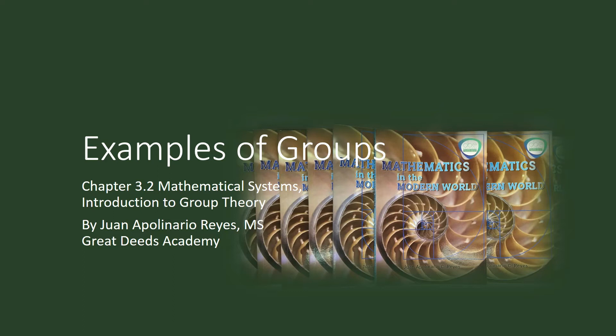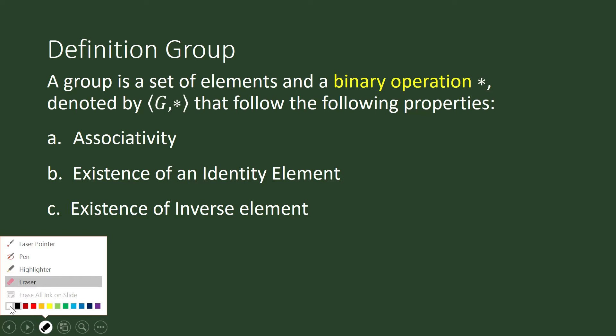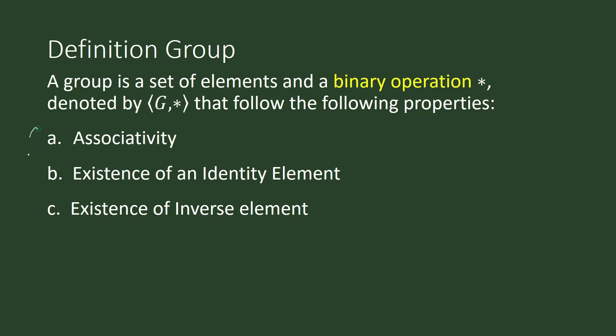Let us show examples of groups, beginning with infinite sets. A group is a set of elements and a binary operation — this is how we denote a group. It is always a set and a binary operation such that these properties are satisfied: associativity, the existence of an identity element, and the existence of an inverse element.